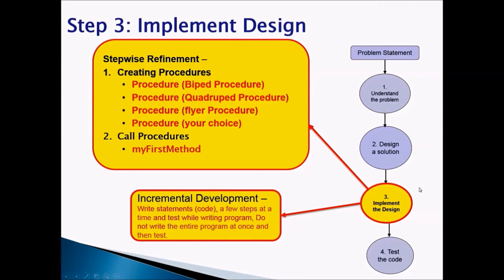Step 3: Implement design. You will take your storyboard procedures and create them in Alice — procedure one for a biped class, procedure two for a quadruped class, procedure three for a flyer class, and procedure four in the class of your choice. Once your procedures are created, call them in my first method. While creating your procedures, don't forget incremental development — write a few steps at a time and test while writing.